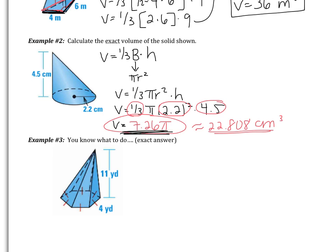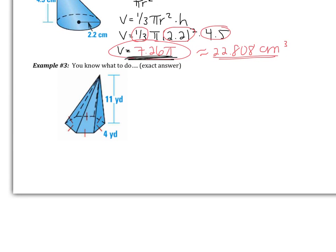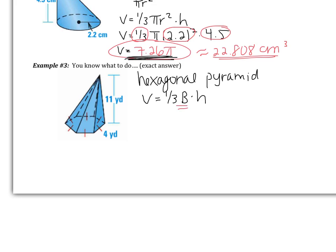That one shouldn't have been too difficult. But example three definitely steps up our game — it's certainly more difficult. Example three says calculate the volume. This is a hexagonal pyramid, so the base is a hexagon. My volume is going to be one-third area of the base multiplied by the height. I need to start by finding the area of the hexagon. This figure is kind of difficult to see, so I'm going to redraw the hexagon.